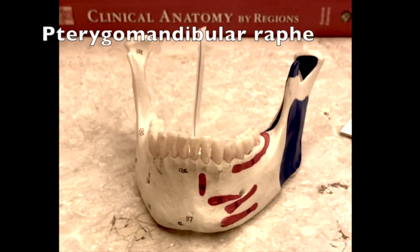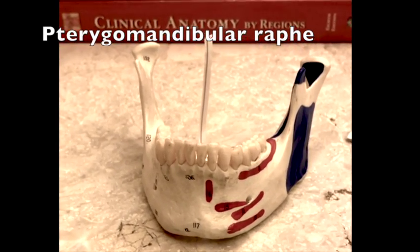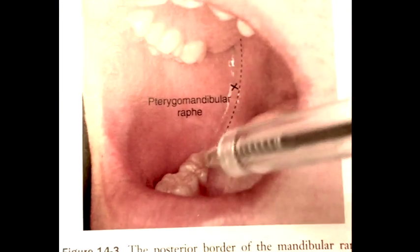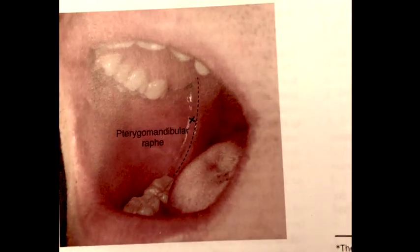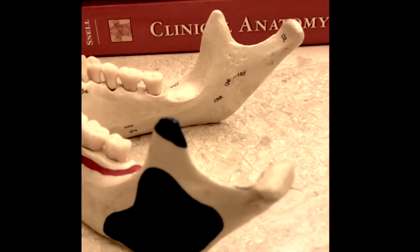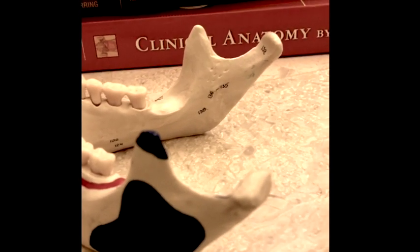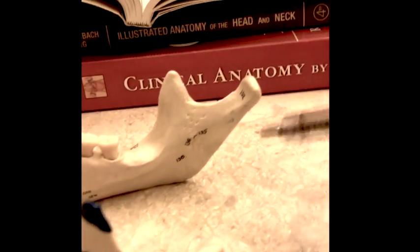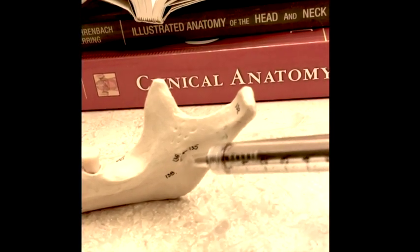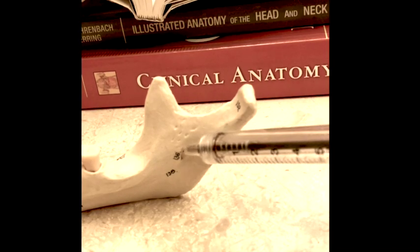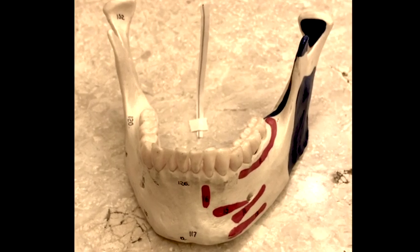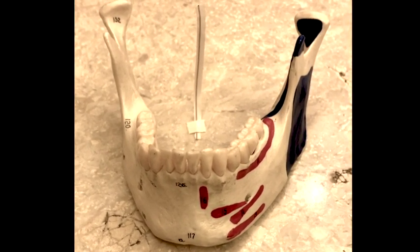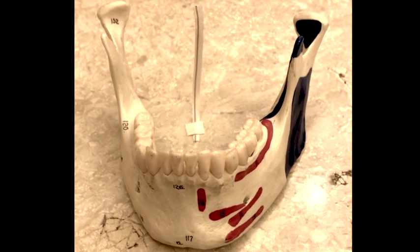Your soft tissue landmark is the pterygomandibular raphe here. The fold is basically just the superior part that covers the raphe. Your aim to deliver successful anesthesia is to be around the mandibular foramen, to catch the nerve. Above this foramen there is a structure called the lingula.